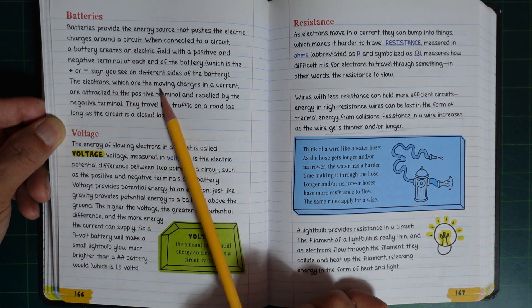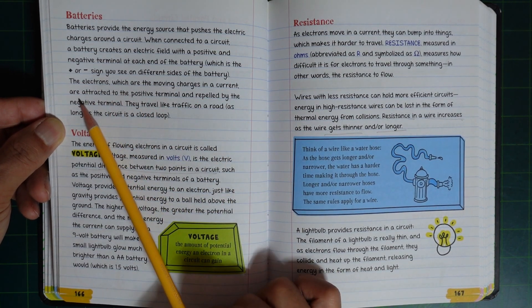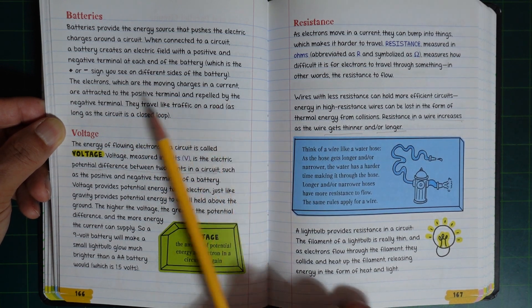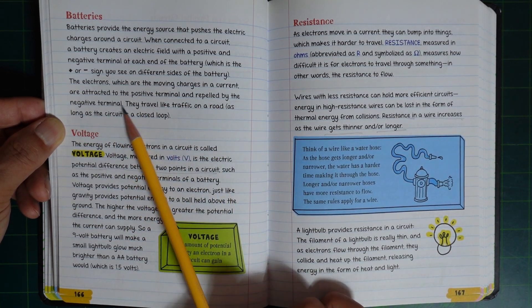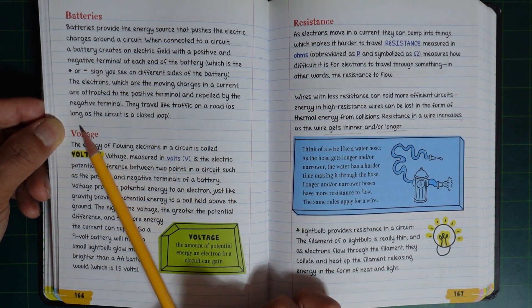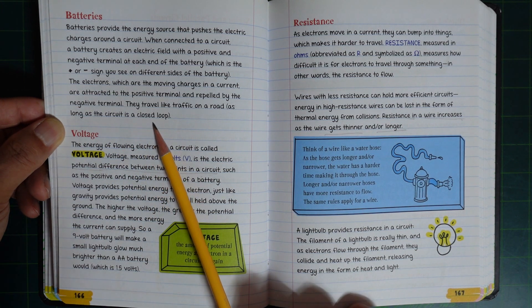The electrons, which are the moving charge in a current, are attracted to the positive terminal and repelled by the negative terminal. They travel like traffic on a road as long as the circuit is a closed loop.